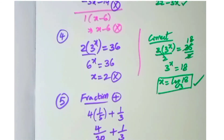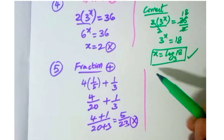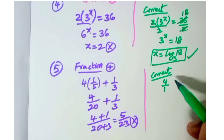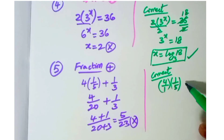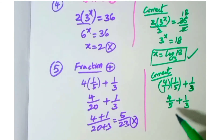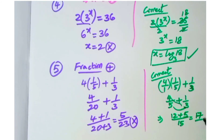The correct process: four into one-fifth is four-fifths, then add one-third. Apply the butterfly method: five times three equals 15 as the denominator, then three times four equals 12 plus five times one equals five, giving numerator 12 plus 5 equals 17. So the answer is 17 by 15. That is the right answer.